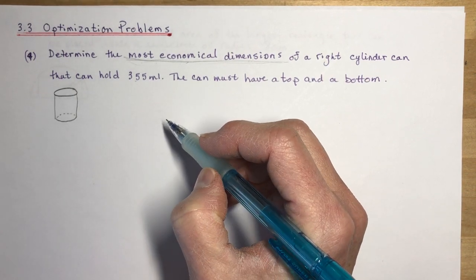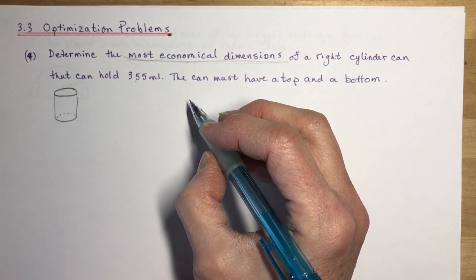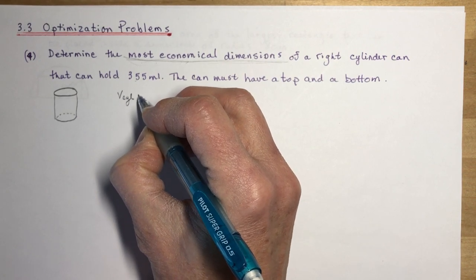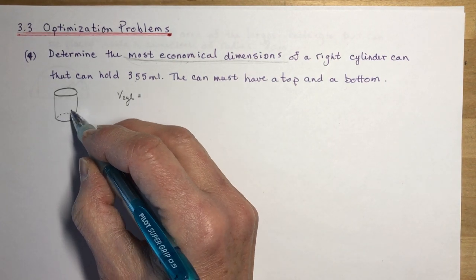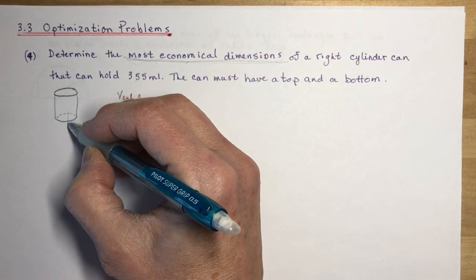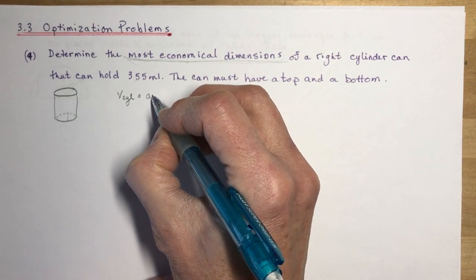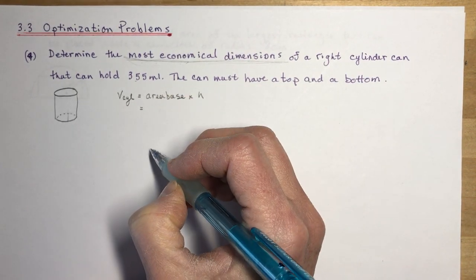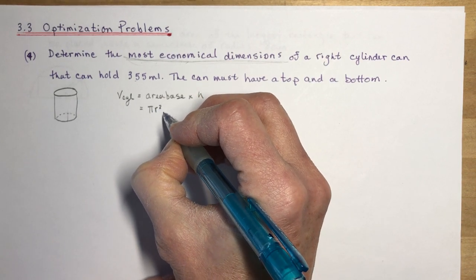Your teacher may give you formulas for these shapes, but you should understand how to find the volume of a cylinder. The volume of any shape is the area of the base times the height. For a cylinder, the base is a circle. A right cylinder just means it has a right angle — it's straight up and down, not slanted. The area of the base is πr² and the height is h.